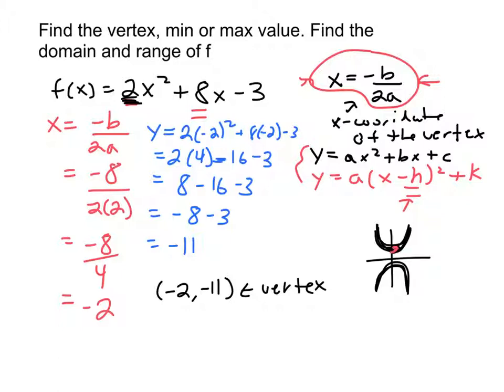Which is down here, will be a min. Min, so this is a min value, and the min value is the y-coordinate of the vertex. So that will be negative 11.